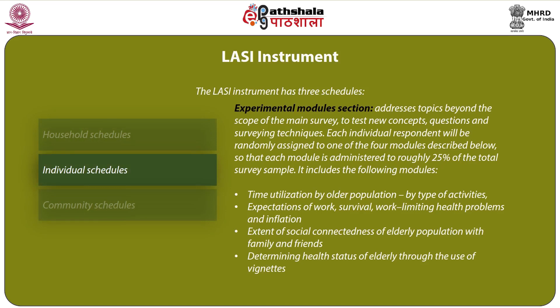Each individual respondent will be randomly assigned to one of four experimental modules, so that each module is administered to roughly 25% of the total survey sample. These modules include: first, time utilization by older population by type of activities; second, expectations of work, survival, work-limiting health problems and inflation; third, extent of social connectedness of the elderly population with family and friends; and fourth, determining health status of elderly through the use of vignettes.